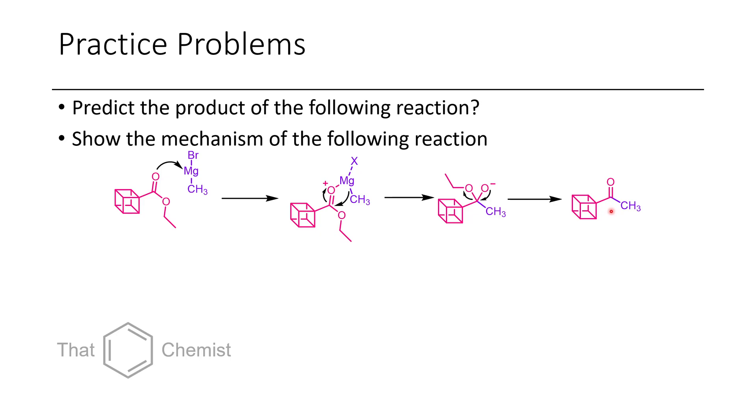A second Grignard reagent is going to add to this. So again, we get the carbonyl coordinating the magnesium, the shift of the methyl group, and then elimination of the magnesium. This alkoxide, upon workup, affords the tertiary alcohol, and this would be the product of this reaction, this cool-looking tertiary alcohol.